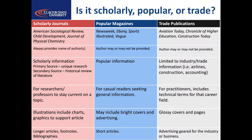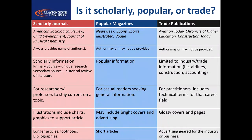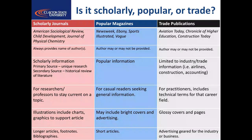Throughout your academic career you're going to be asked to rely heavily on scholarly journals, so let's take a minute to describe specifically what that means. Scholarly journals — or academic or peer-reviewed journals — the three terms are used more or less interchangeably. They refer to the publication process, how an article gets into print. Scholarly journals are usually contrasted with popular magazines, so let's start there.